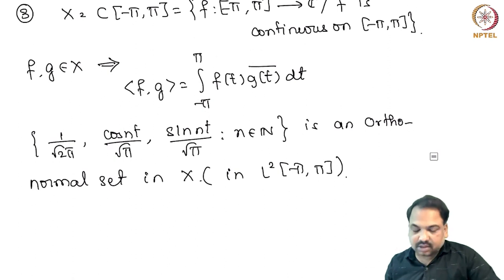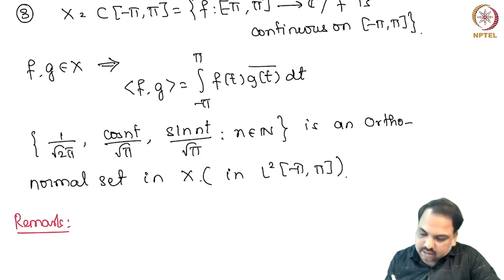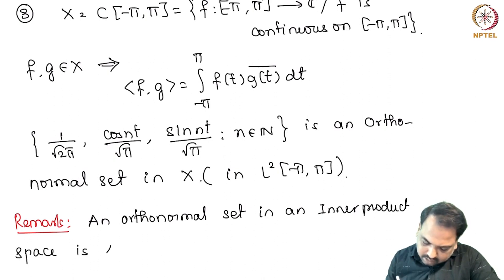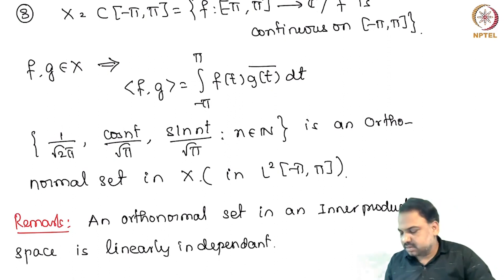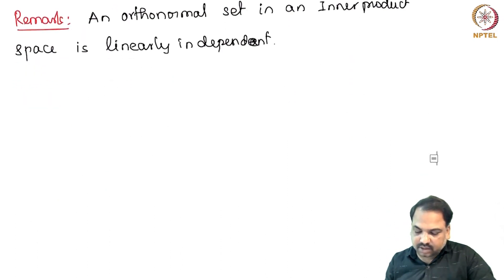One more important observation about orthonormal sets in general is that every orthonormal set is linearly independent. Now we can ask: is the converse true? In general, the converse is not true. But actually, we can find an orthonormal set from a linearly independent set. This process is known as the Gram-Schmidt process.